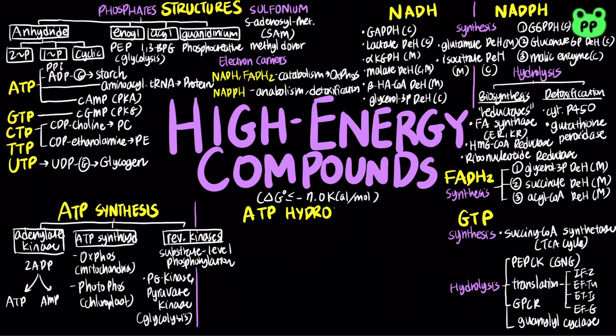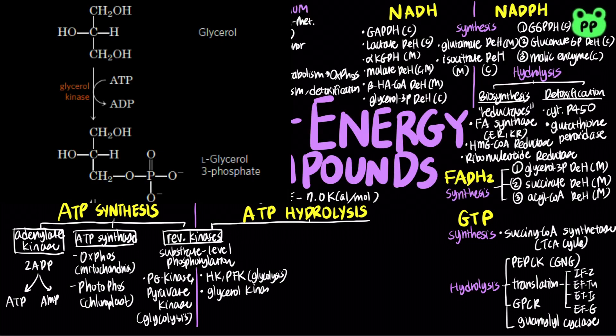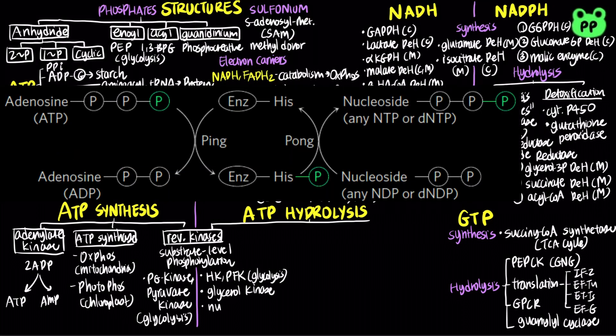ATP hydrolysis also occurs in three mechanisms. First, through reversible substrate-level phosphorylation, including hexokinase and phosphofructokinase from glycolysis, both of which are part of the energy investment phase, as well as glycerol kinase from glycerol metabolism and nucleoside diphosphate kinase, which catalyzes the exchange of terminal phosphate between different nucleoside diphosphate and triphosphates.